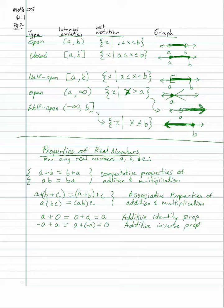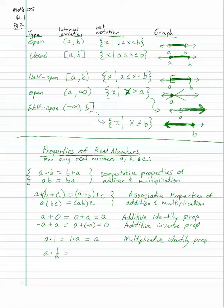For multiplication, the multiplicative identity property states A times 1 equals 1 times A, which equals A. The multiplicative inverse property says A times its reciprocal (1 over A) equals 1 — we use this property all the time. Note that A cannot be zero, since 1 over 0 is undefined, so zero has no multiplicative inverse.